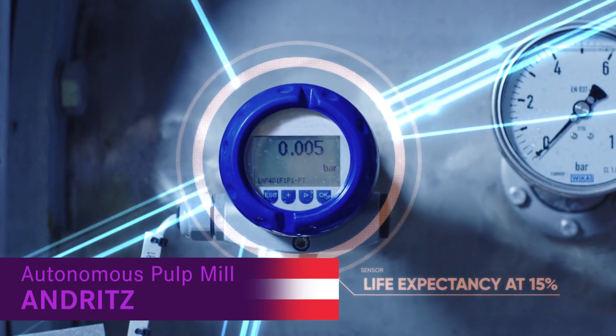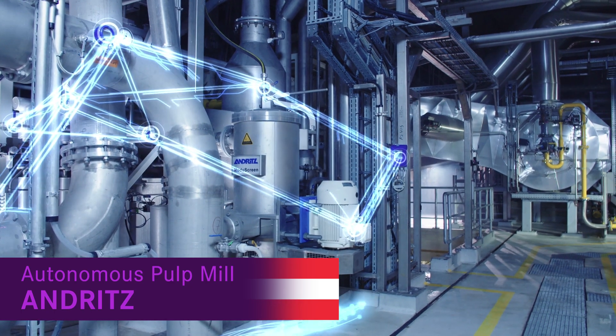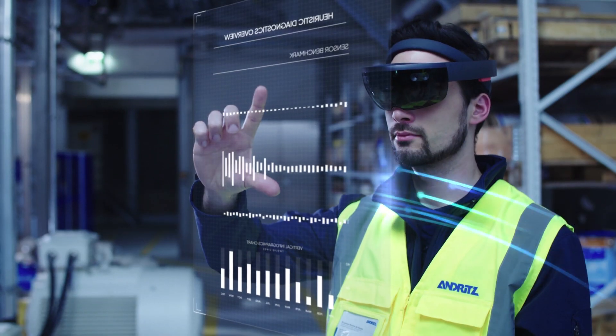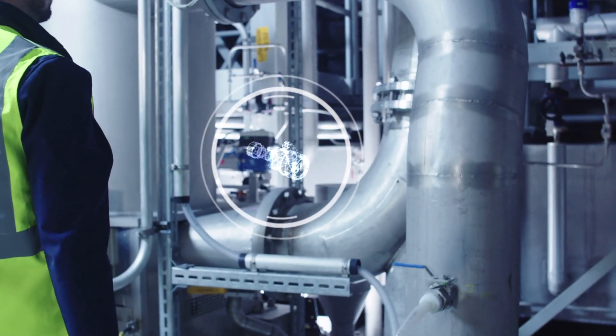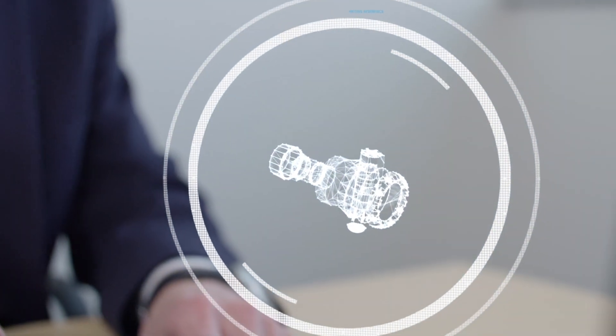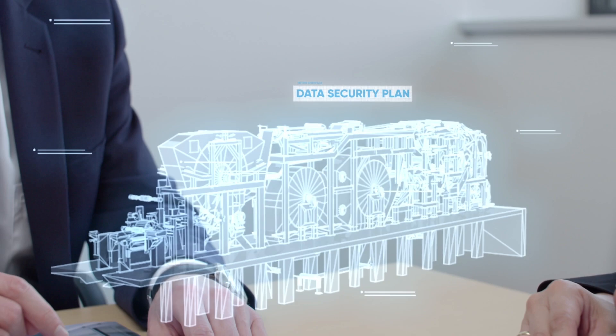The Autonomous Pulp Mill by Andritz, which moved from producing machinery to build a modular and AI-enhanced solution for an autonomous factory, transforming the pulp manufacturing industry.